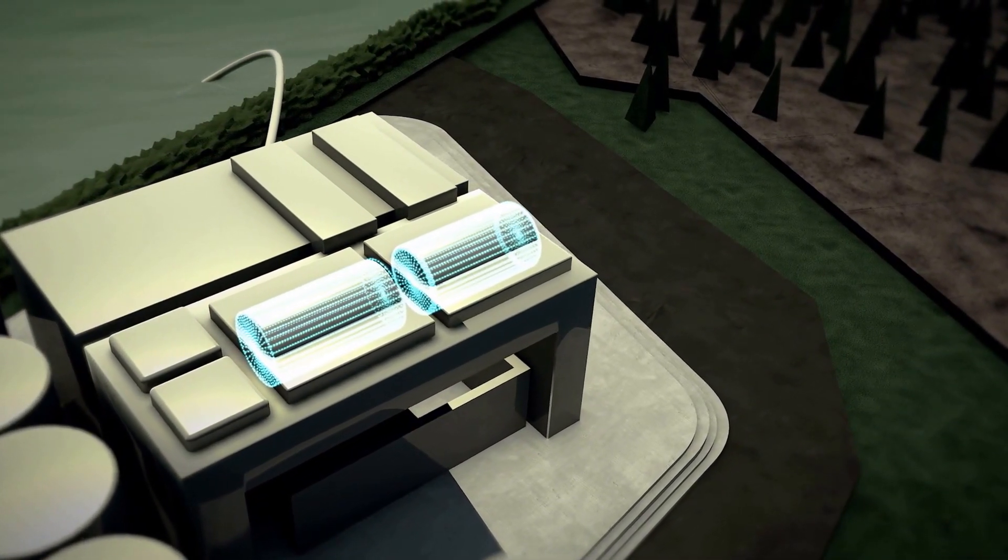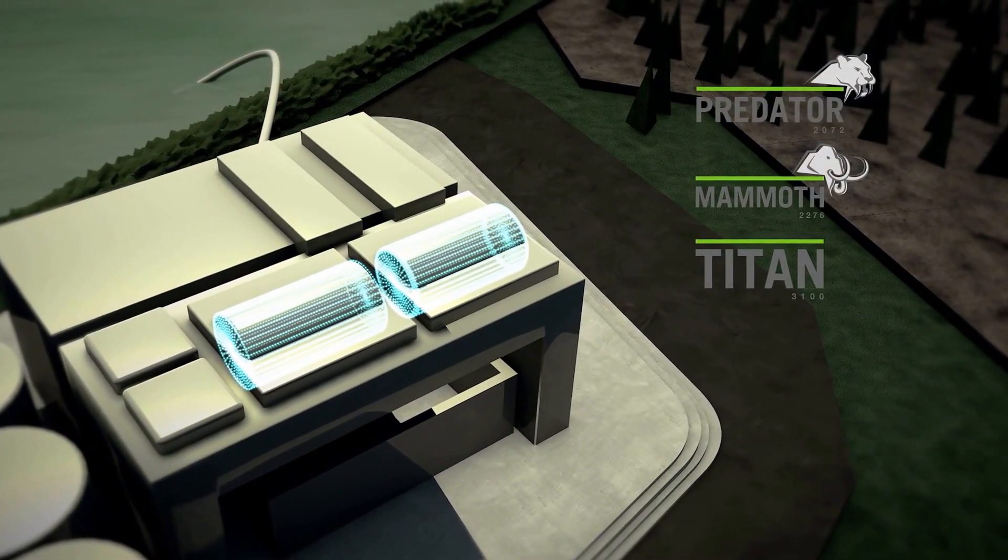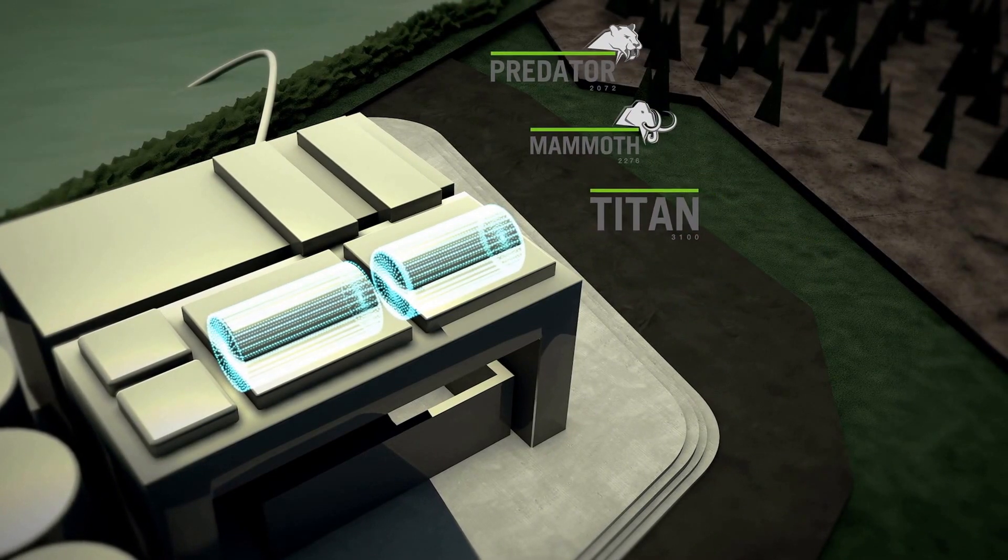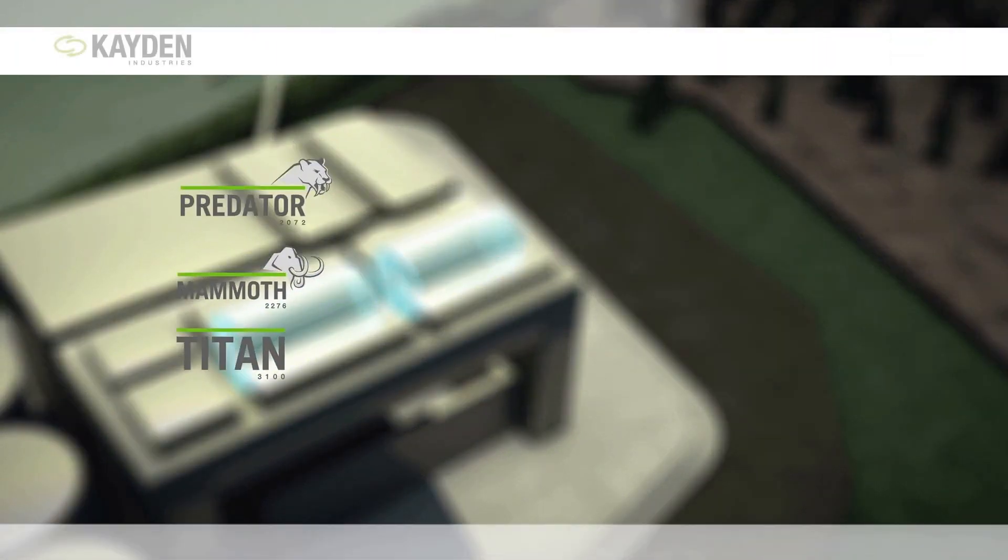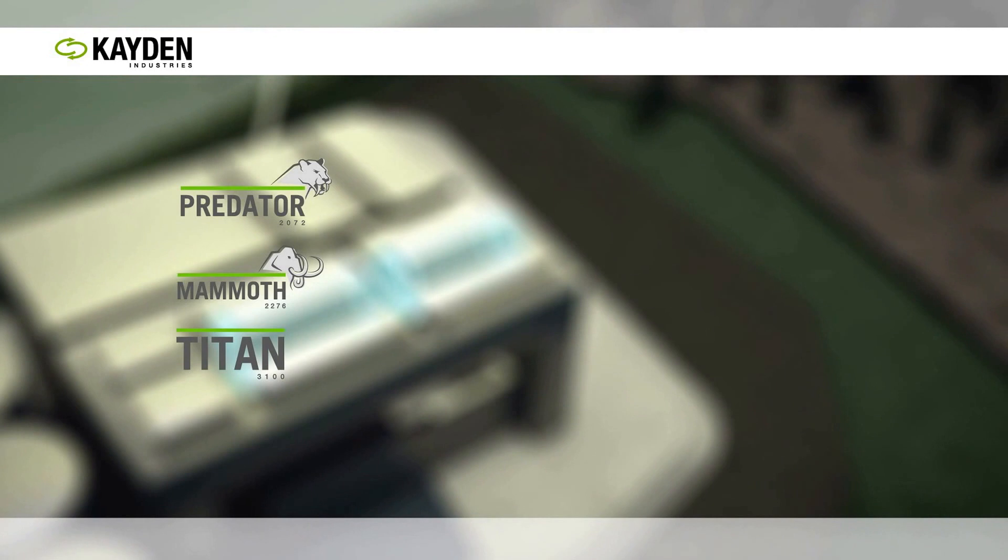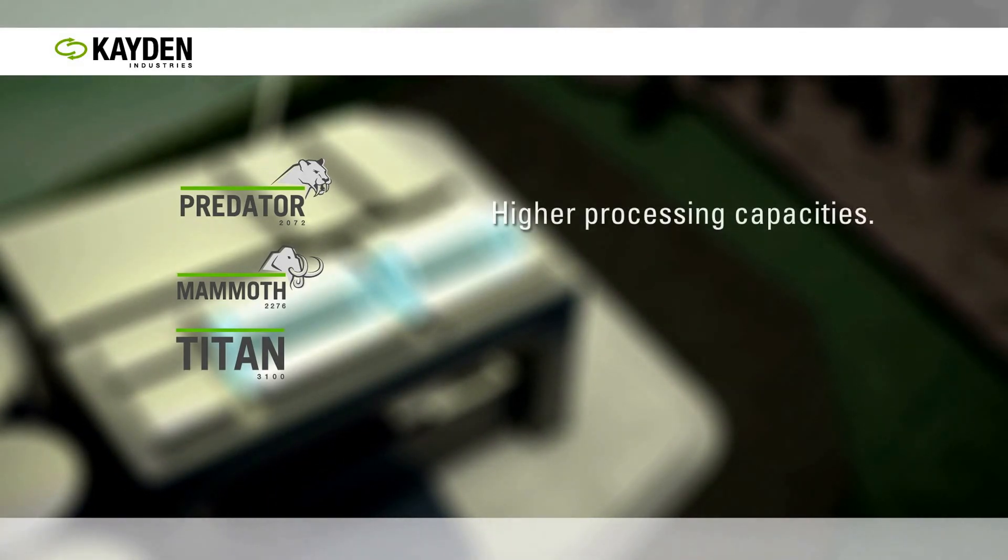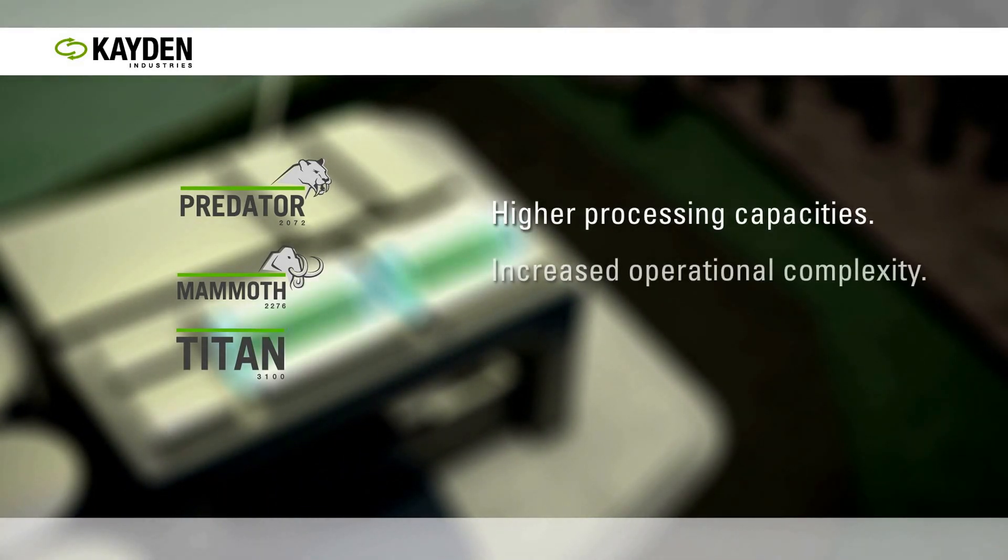Caden operates three different size centrifuges, which can be selected according to your timeline and volume. Our centrifuges will continue to attract high demand as the liquid-solid separation industry requires higher processing capacities with increased operational complexity and environmental considerations.